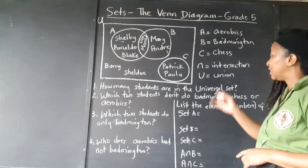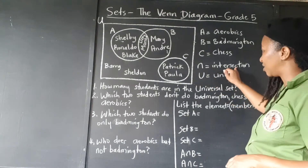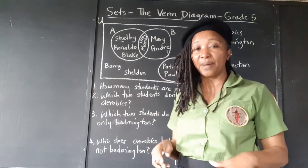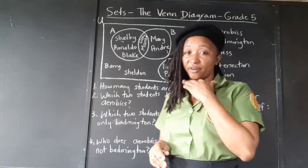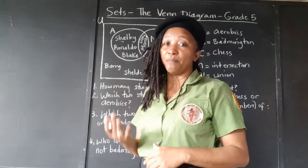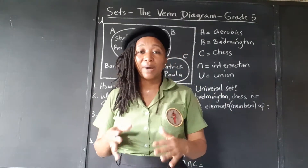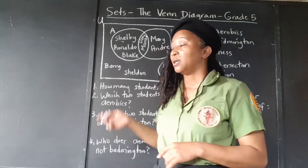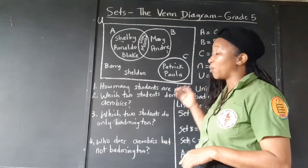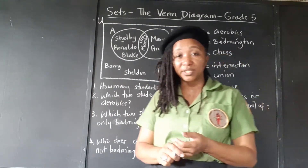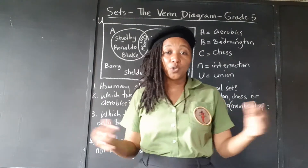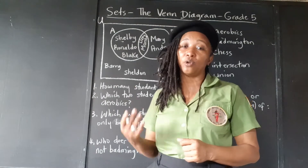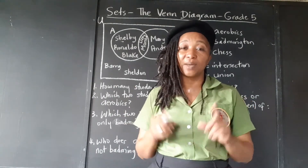This sign means intersection and this sign means union. The intersection is where we have two sets overlapping with each other, and the members in the intersection participate in both activities. The union is if we were to list all the members of set A, all the members of set B — the union of A and B would be everybody in A, everybody in B, and those who overlap we just need to list them once.